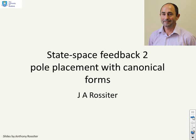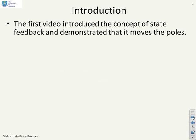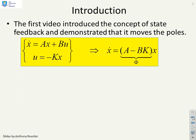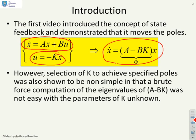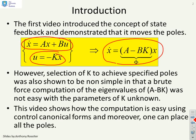This video introduces a formal method for doing a pole placement design using state feedback. The first video introduced the concept of state feedback, showing that it moves poles: with u = -Kx on a state-based model x-dot = Ax + Bu, the closed-loop becomes x-dot = (A - BK)x. However, selecting K to achieve specified poles is non-simple in general using brute-force computation of eigenvalues of A - BK. This video shows the computation is much more straightforward using control canonical forms, allowing you to place the poles exactly where you want.